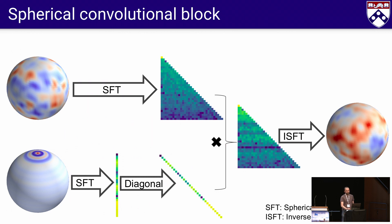This is our spherical convolutional block. First, spherical Fourier transforms convert to the spectral domain, where we represent frequencies as rows. Note that the zonal filters have only one non-zero coefficient per frequency. The convolution spectrum is then obtained by multiplication with a diagonal matrix, and an inverse spherical Fourier transform brings the output back to the spatial domain. If we were to do a spherical correlation here, these operations would be replaced by more expensive ones: a tensor product of coefficients and a full inverse SO3 Fourier transform.